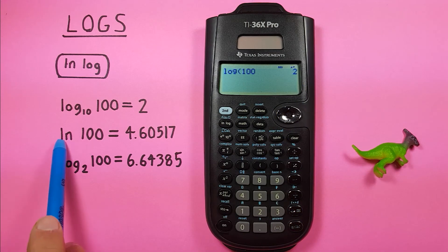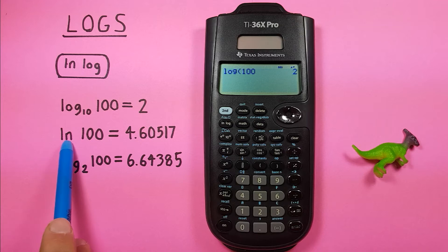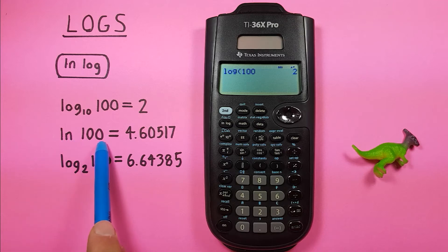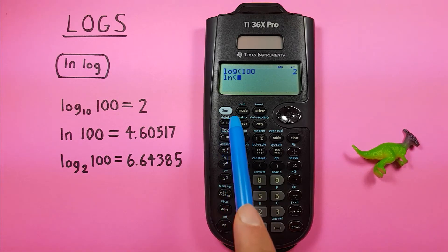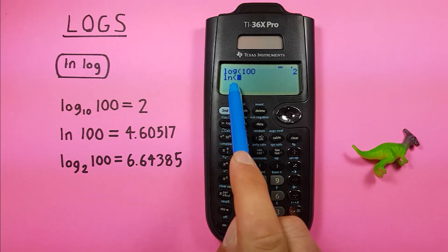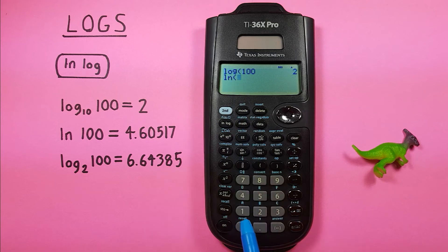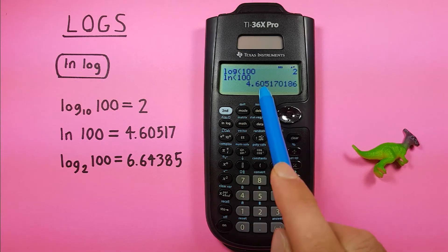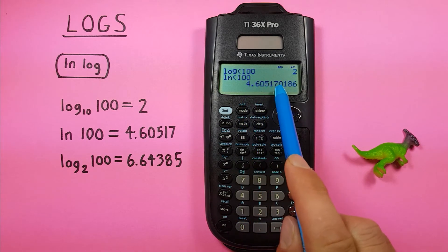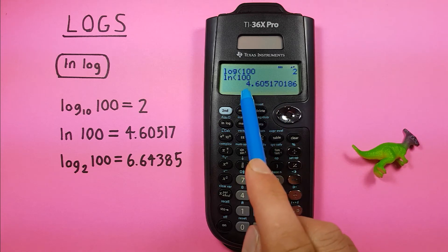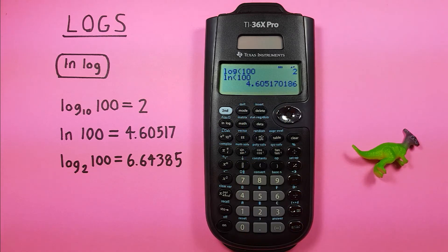If we want to do ln, or natural log of 100, you can see if you press this once, you get the ln right there. We just put our 100 in and press enter, and we get the result, which for this is 4.60517.